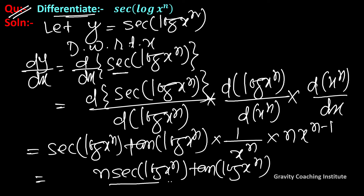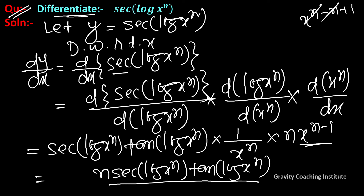This gives n times (log x) to the power n minus 1, upon x. So the final result has the power reduced to n minus 1, multiplied by 1 over x.